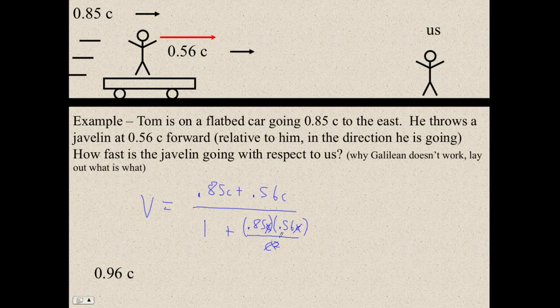Okay. So now I'm just going to plug this into my calculator, left parenthesis, 0.85 plus 0.56, divided by left parenthesis, and I did a right parenthesis, and then divided by left parenthesis, 1 plus 0.85 times 0.56, right parenthesis.